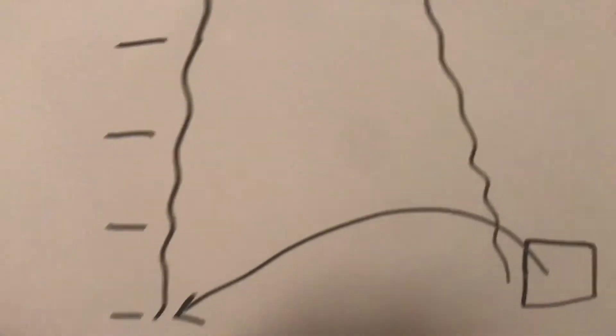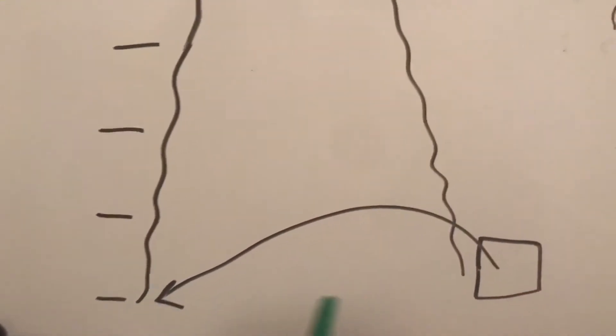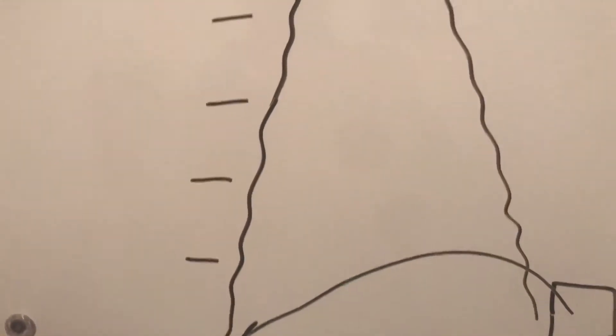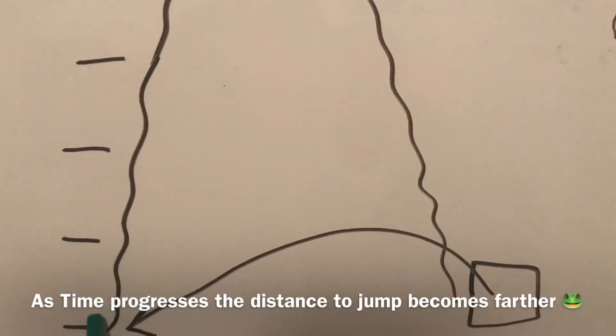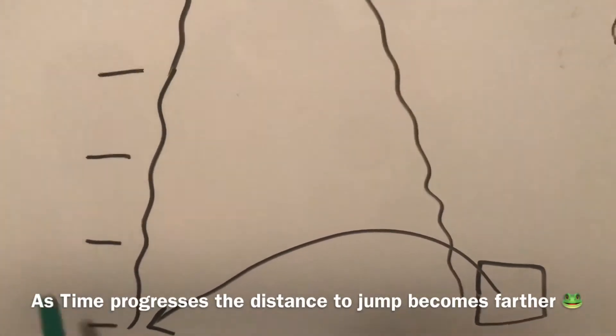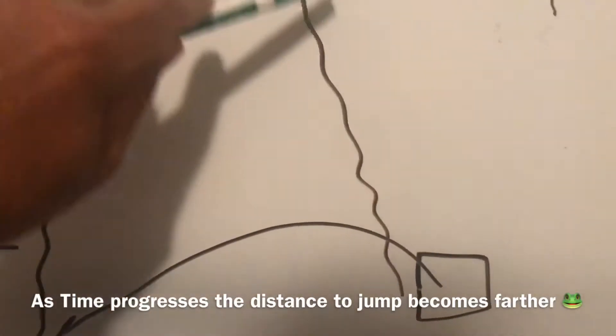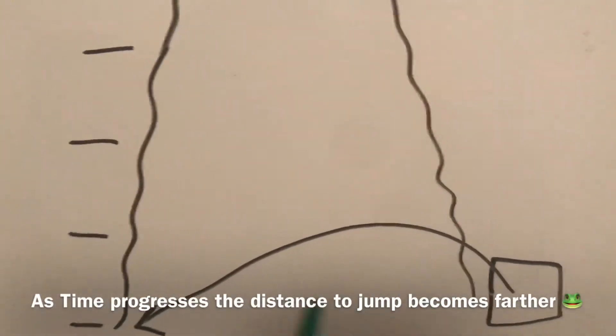The reason that I'm showing you this example of a wake is because as time progresses, the distance between this reality and the other reality is going to spread. You'll still be able to make the jump from your belief system across to one that's particularly better. But as time progresses, you're going to see this gap get wider and wider.